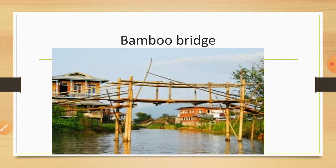We can talk about bamboo bridges. This type of bridge is used in heavy rainfall areas. For example, in Assam. Sometimes after rain, there is high water everywhere in Assam. So in that area, children use bamboo bridges to cross these water bodies.